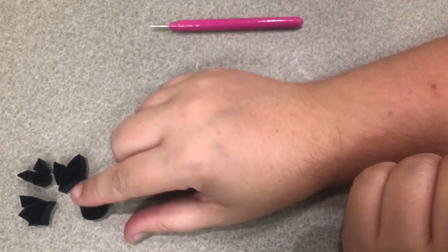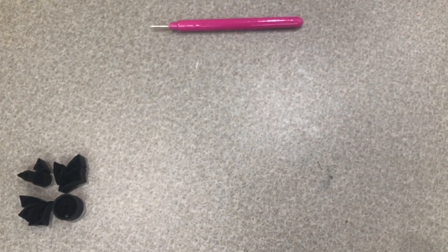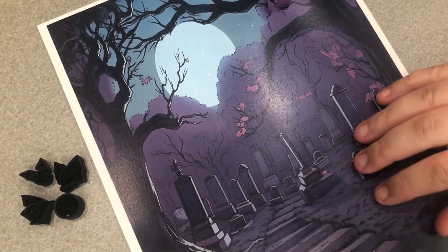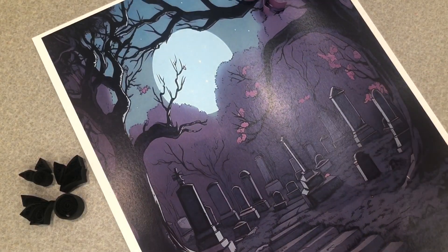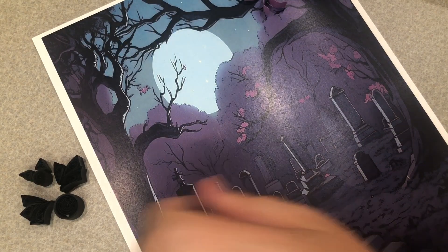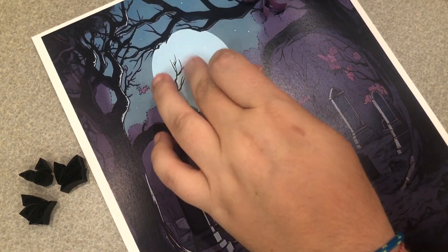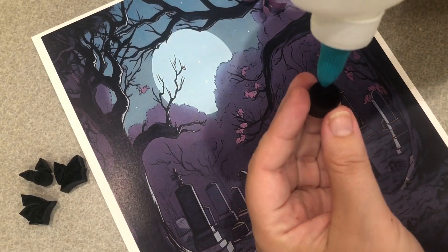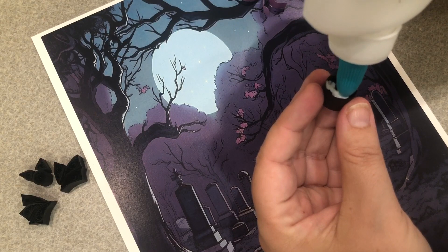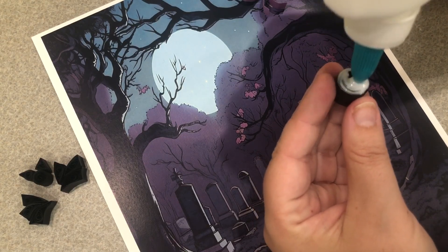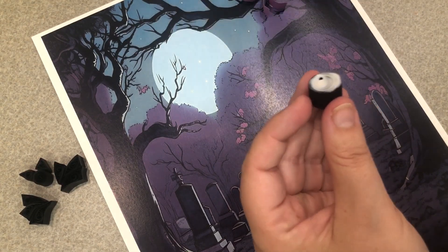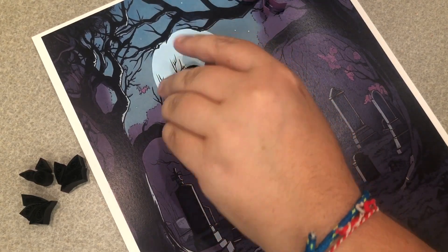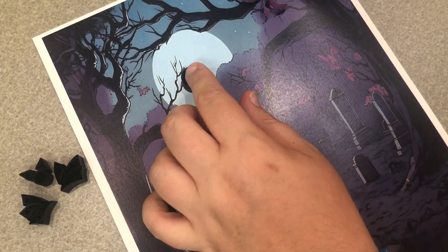So now all that's left to do is grab our background and add our bat and assemble it all together. Now I'm going to put my little bat right up in the moon flying around. You may place your bat anywhere you would like on your background. I'm going to put some glue all over the back of the little body and stick it down there.